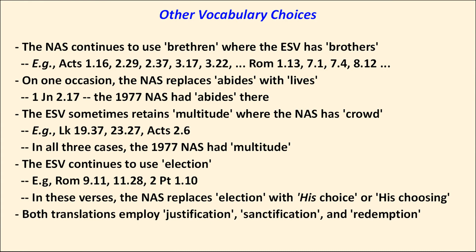To its credit, the 1995 NAS retains the word 'brethren,' though I expect the next edition — perhaps in 2021 — will replace it with 'brothers and sisters.' The ESV sometimes retains 'multitude' where the NAS has 'crowd,' and the ESV uses 'election' while the NAS replaces that with phrases like 'his choice.' Happily, both translations continue to use theological jargon like justification, sanctification, and redemption, and both use the word 'shall' — which the informal speech lobby would like to see disappear.